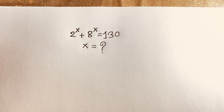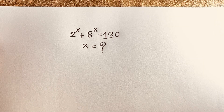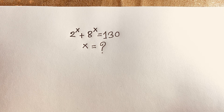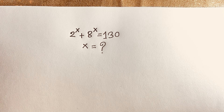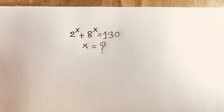Hello everyone. In this video, we are solving a nice exponential equation. It is a math Olympiad question. This question will be 2 to the power x plus 8 to the power x is equal to 130. We are going to find out what is the value of x in this exponential expression.